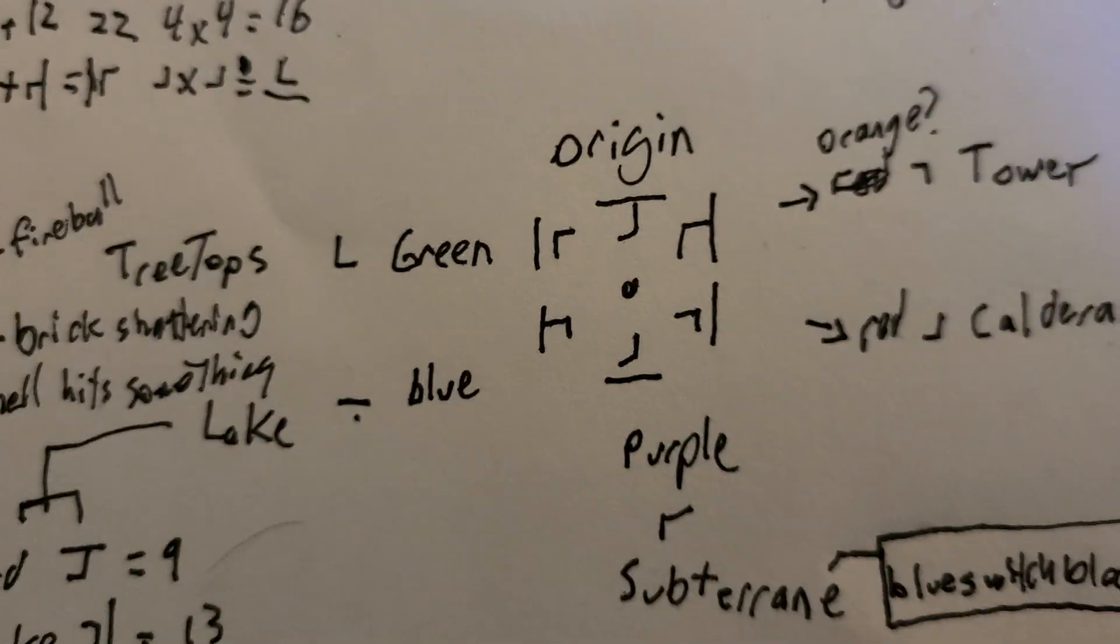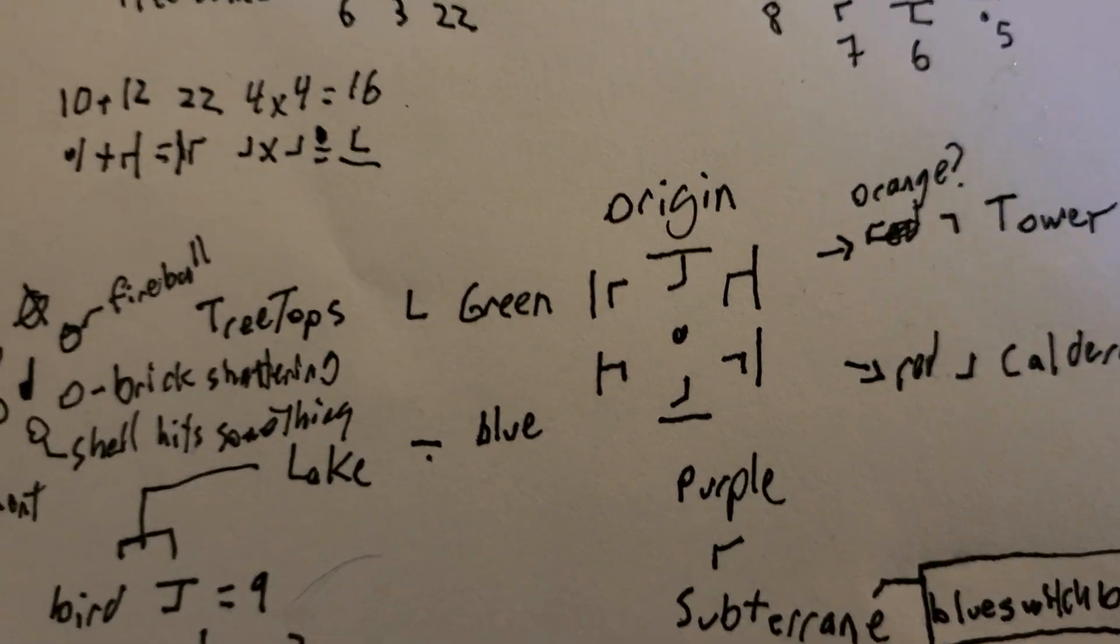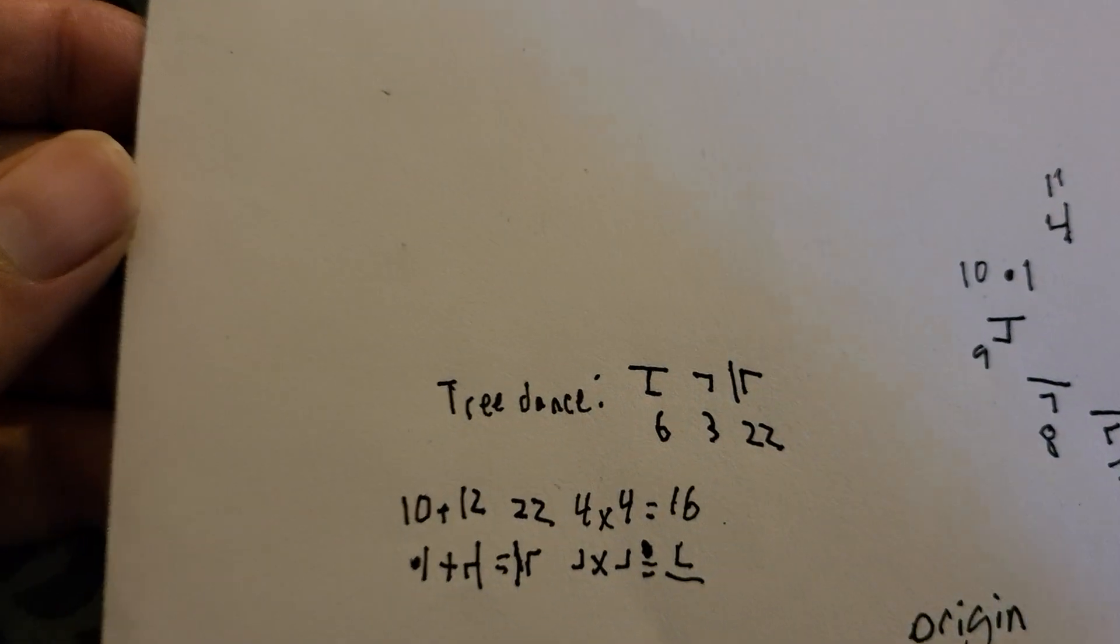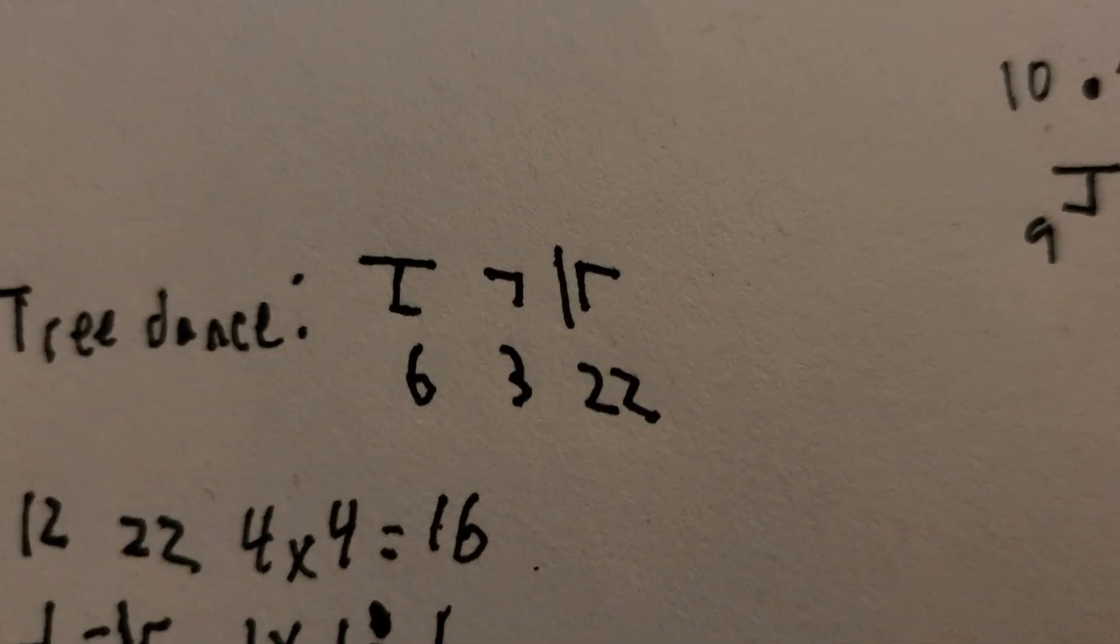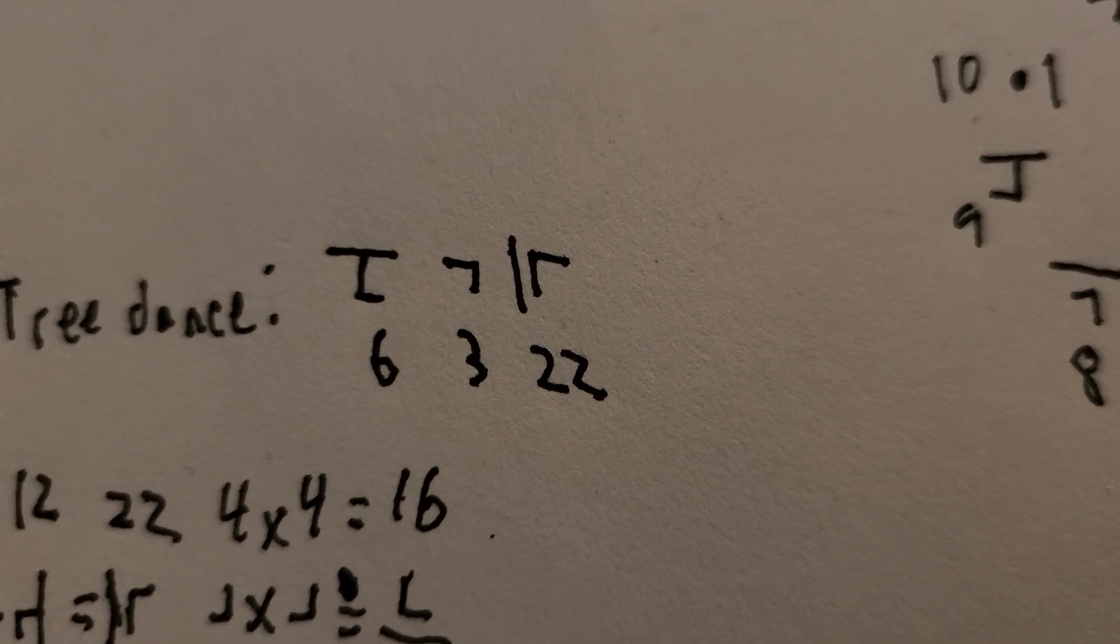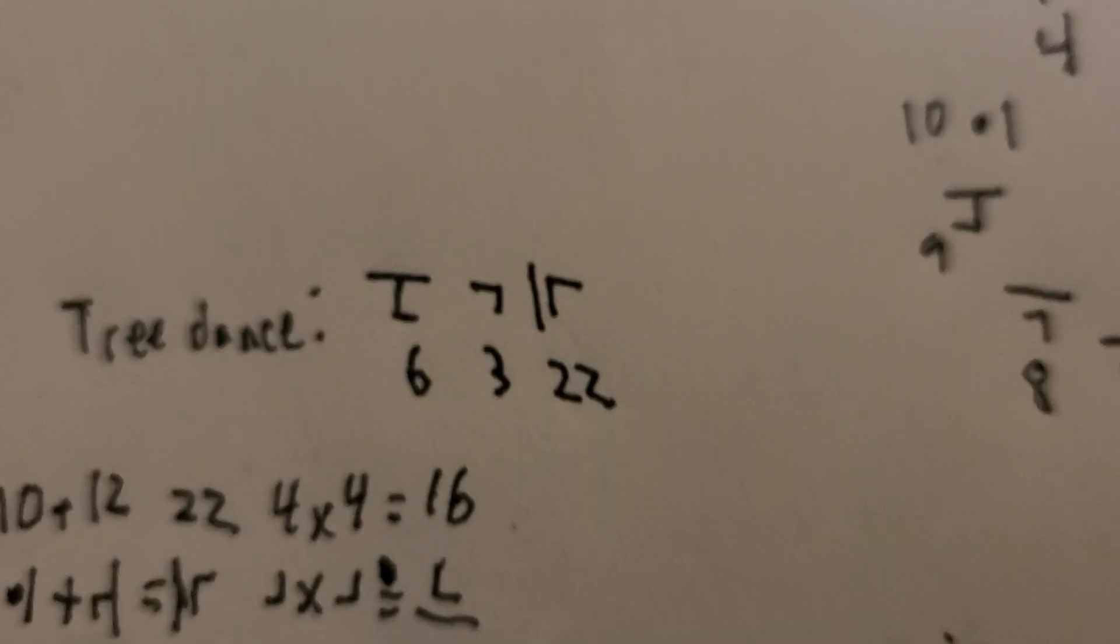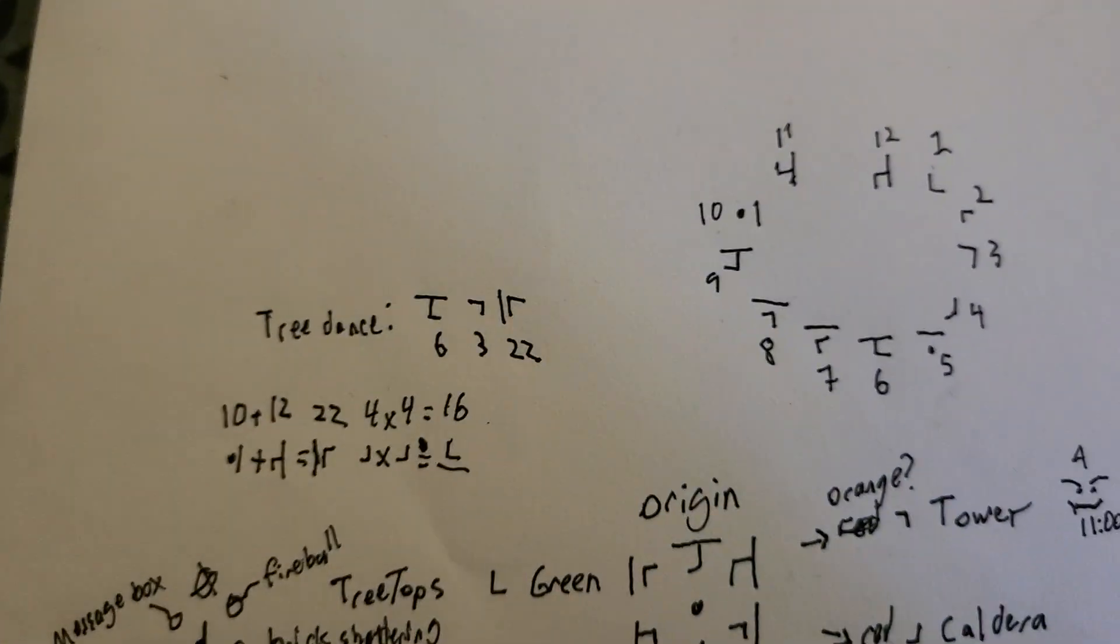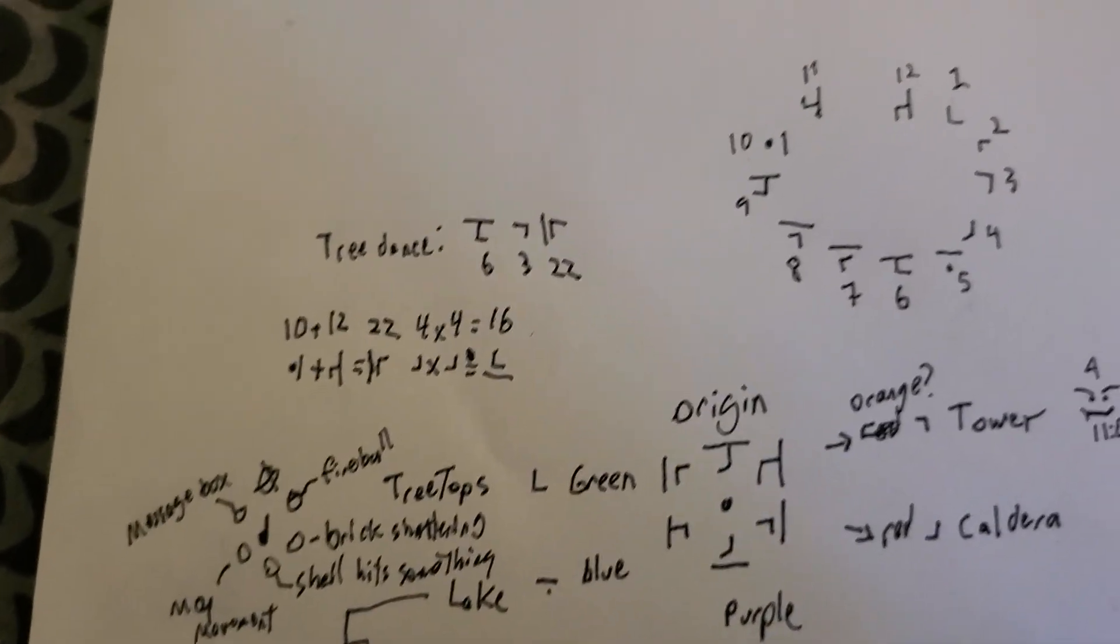That's the thing—I can put a number on each of these origins, but I don't necessarily know if that means anything. It's like the tree dance. I can decode the tree dance—technically speaking it is six, three, twenty-two—but like, what does that mean for me? Nothing yet. I get the feeling that at some point somewhere...